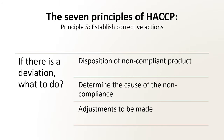Principle 5: Establish the corrective actions to be taken when monitoring indicates that a particular CCP is not under control. The HACCP system is designed to identify health hazards and to establish strategies to prevent, eliminate, or reduce their occurrence. However, deviations from established processes may occur. When there is a deviation from established critical limits, corrective actions are necessary. This will be identified ahead of time for each CCP. The action must determine and correct the cause of noncompliance, determine the disposition of non-compliant product, and make sure that no unsafe product is released, and record the corrective actions taken. The actions taken have two purposes: to control any non-conforming product resulting from the loss of control, and to identify the cause, eliminate it, and prevent the situation from reoccurring. By identifying the corrective action before an out-of-control situation occurs, you are prepared to take action quickly if and when it does occur.